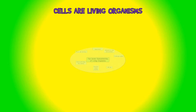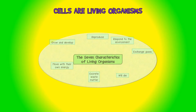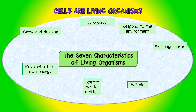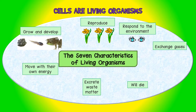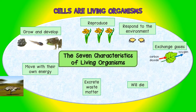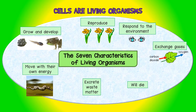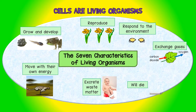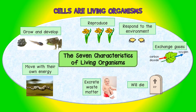Cells are alive. Each cell has the seven characteristics of living organisms. You will remember that all living organisms grow and develop, reproduce, respond to the environment, exchange gases, move with their own energy, excrete waste matter, and will eventually die.